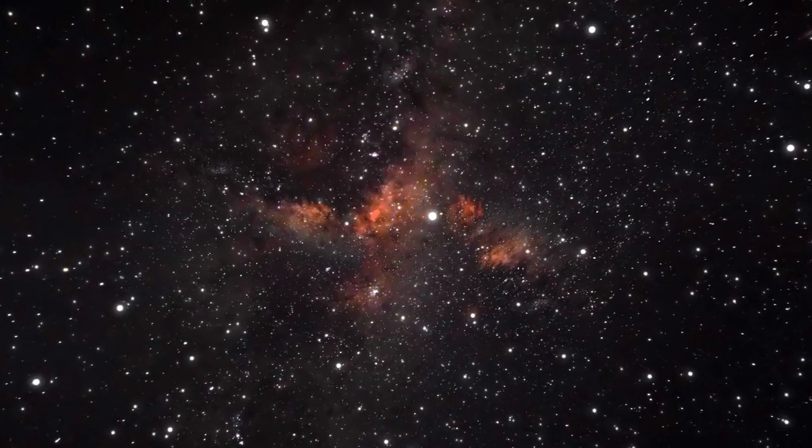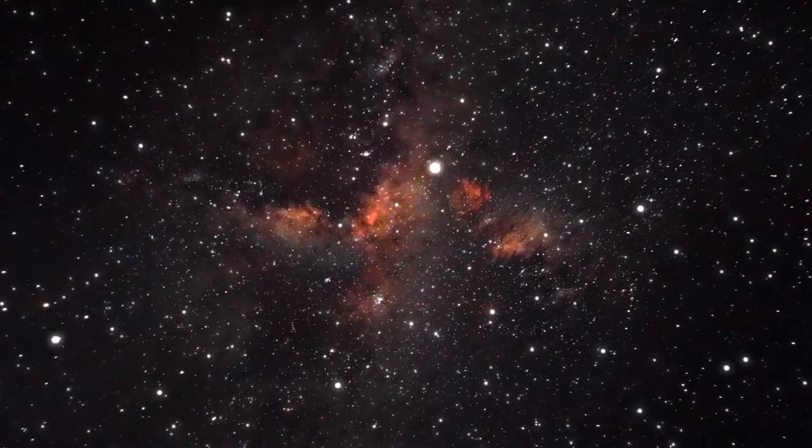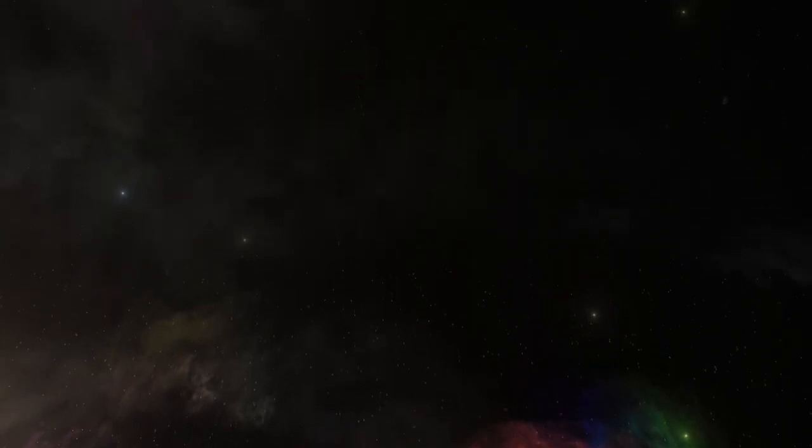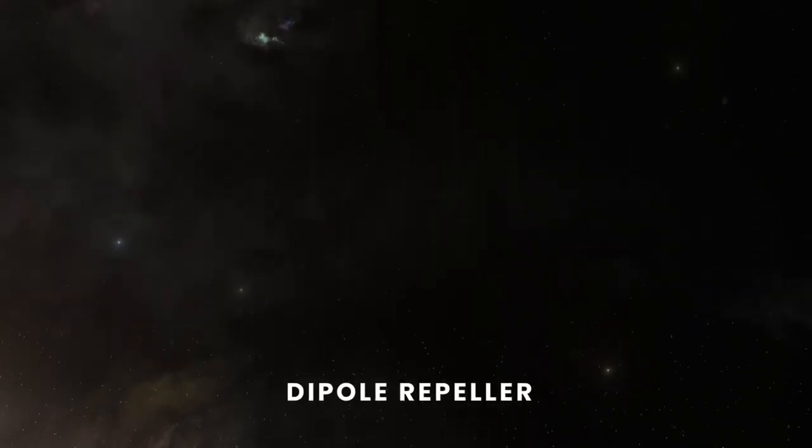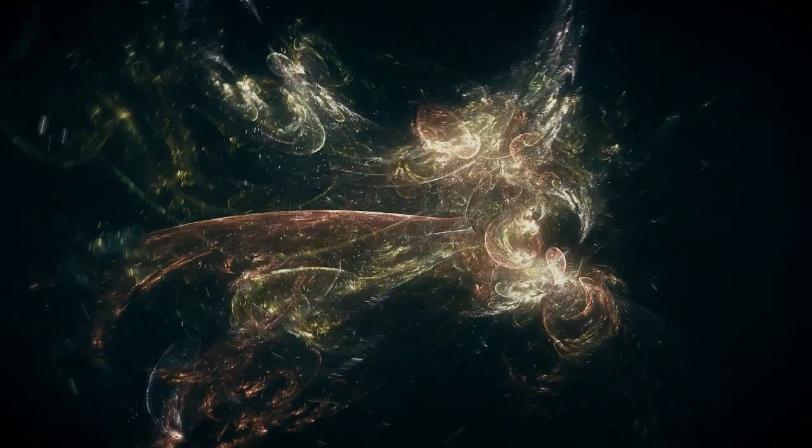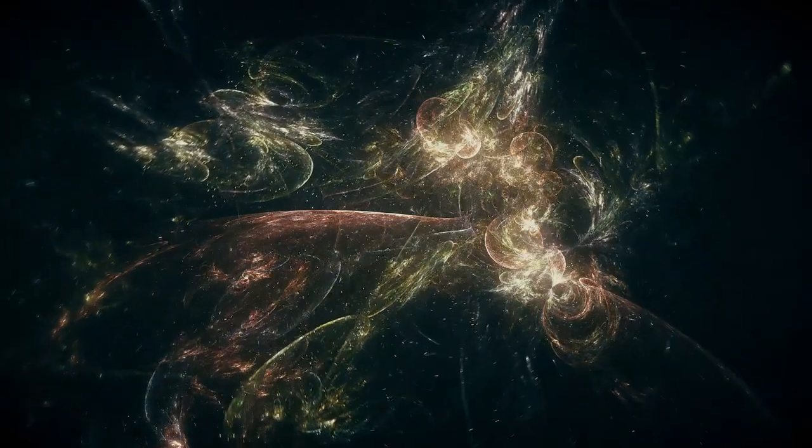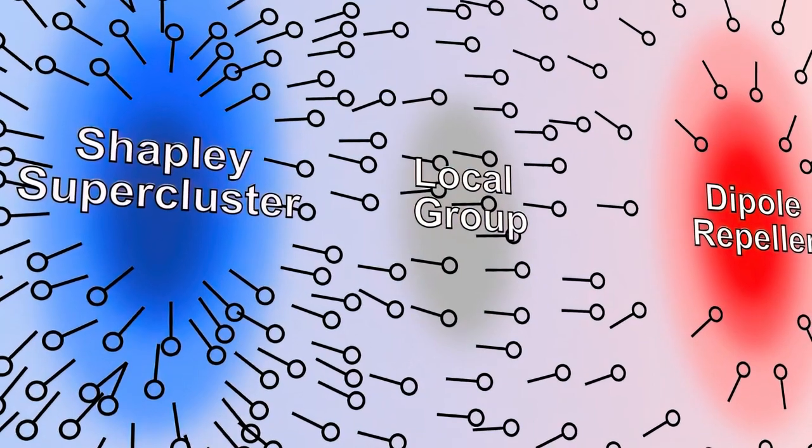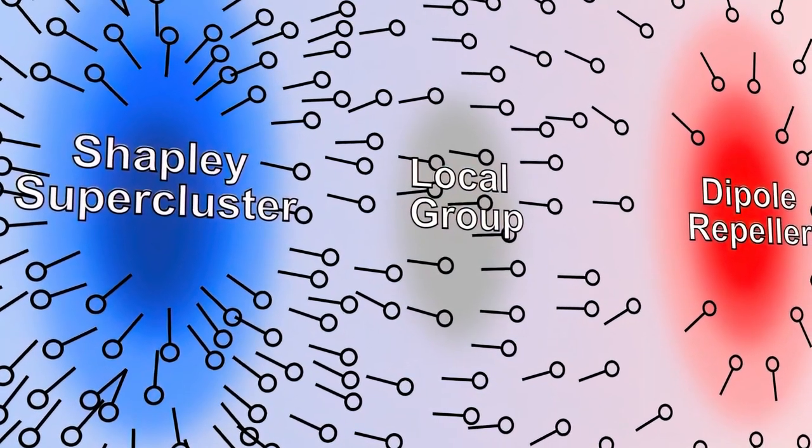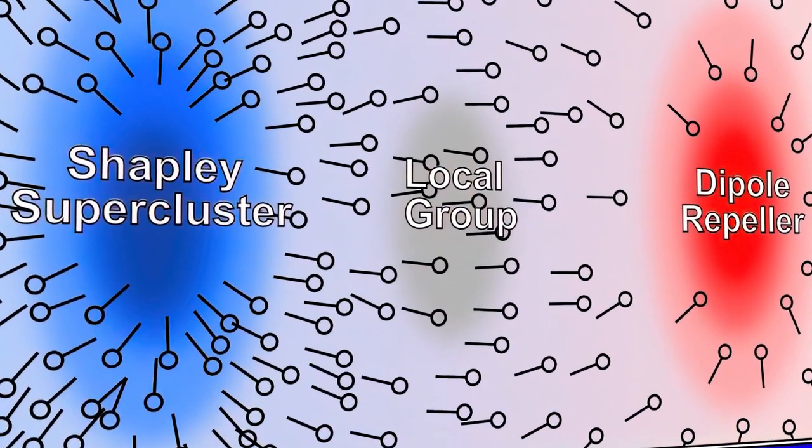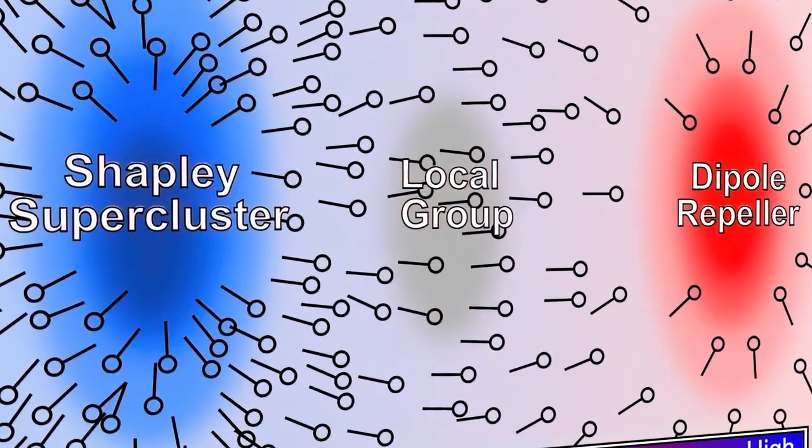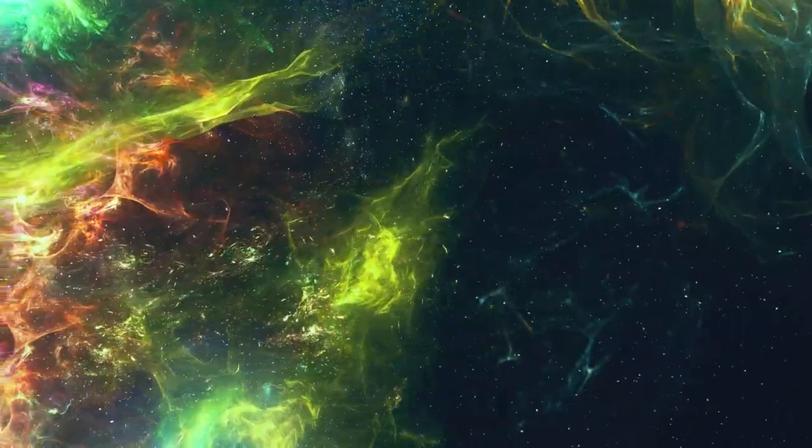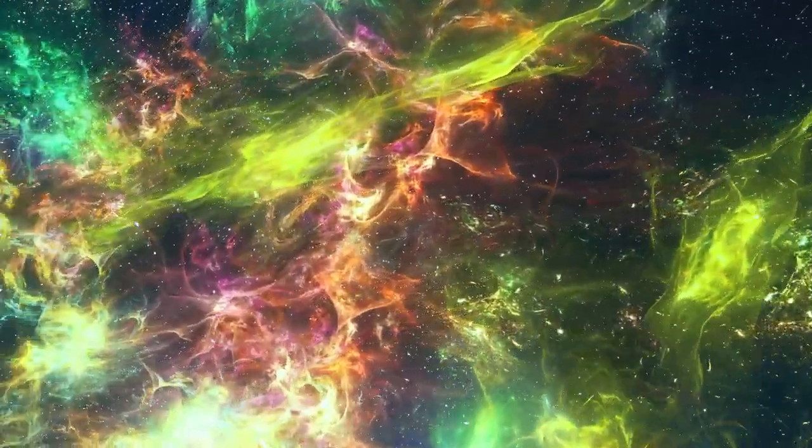Scientists have also created a model of a structure located in the opposite direction from the Shapley supercluster. There, astronomers discovered a region of extremely low density called the dipole repeller. The Shapley supercluster pulls celestial bodies away from this region of space due to its insane gravity. As a result, the dipole repeller is likely devoid of matter. And because underdense regions of space push matter away as much as overdense regions attract, the dipole repeller is associated with the flow we observe too.